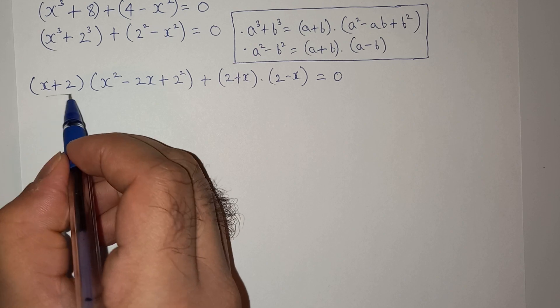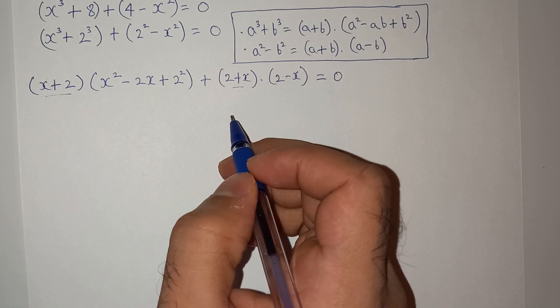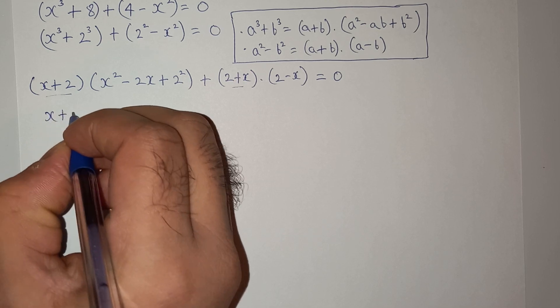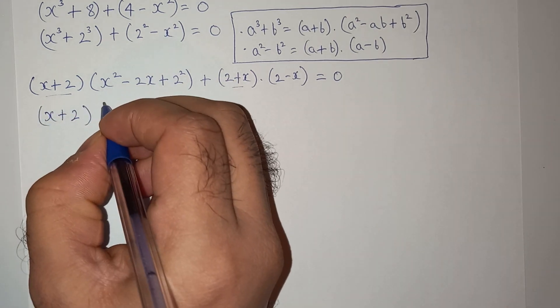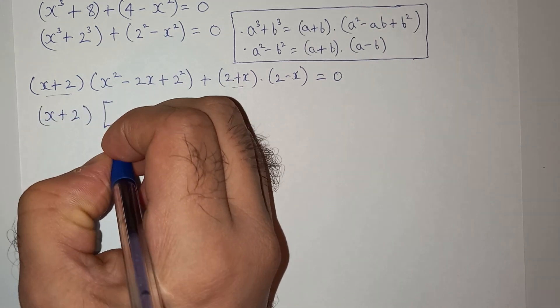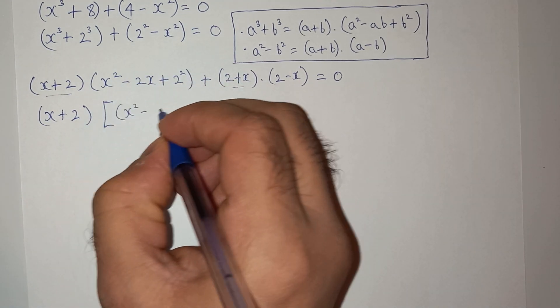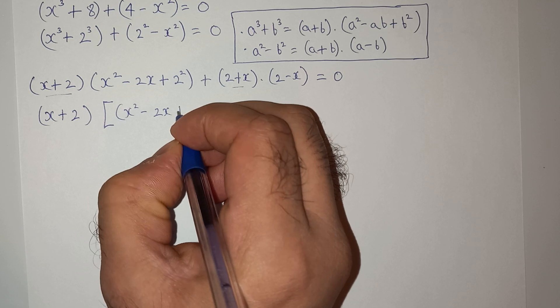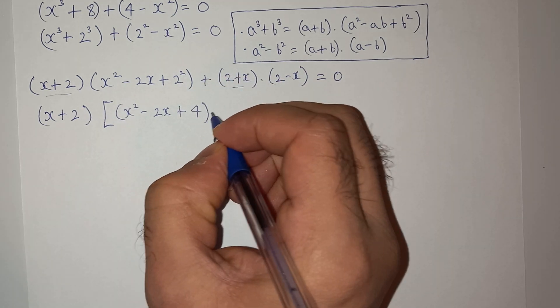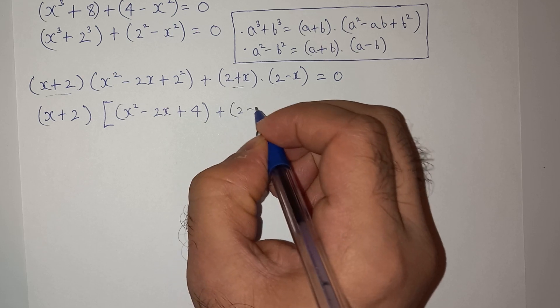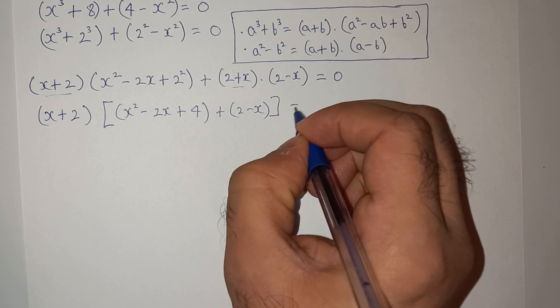As you can see, x plus 2 and 2 plus x are the same. So we can take this out: (x plus 2) in bracket, the first term is x squared minus 2x plus 2 squared is 4, and from here we will have (2 minus x) equals to 0.